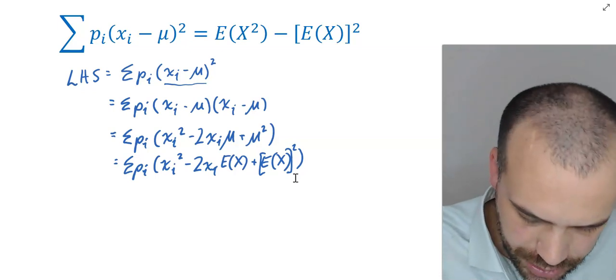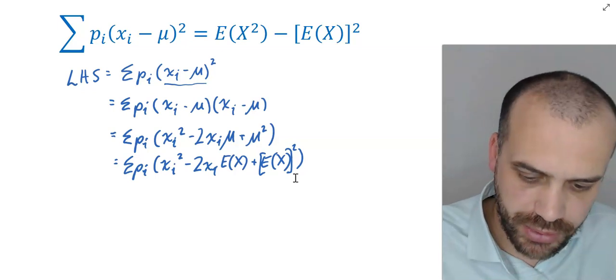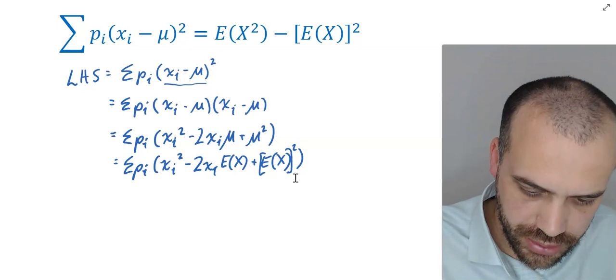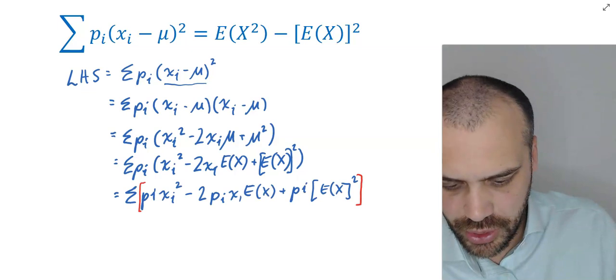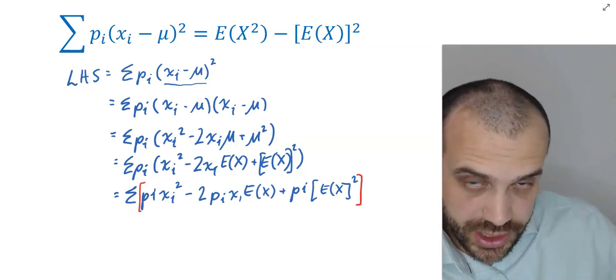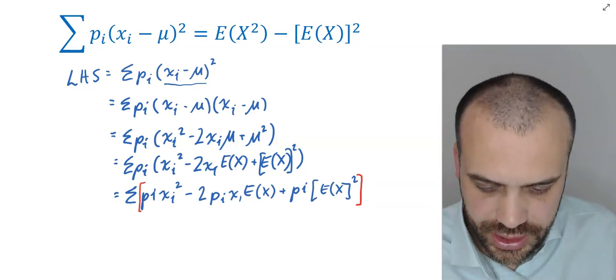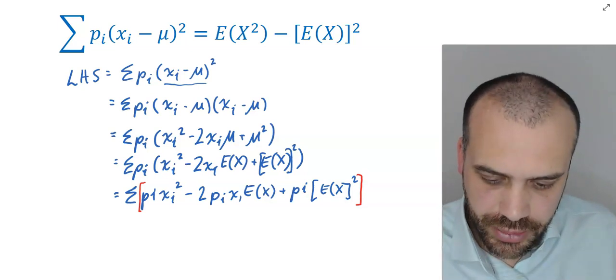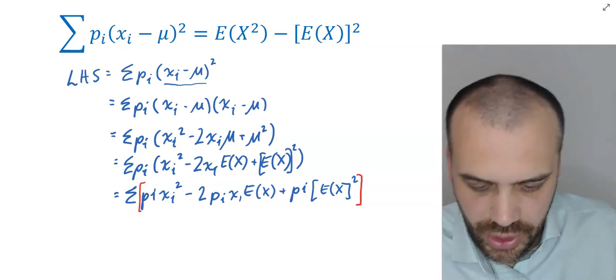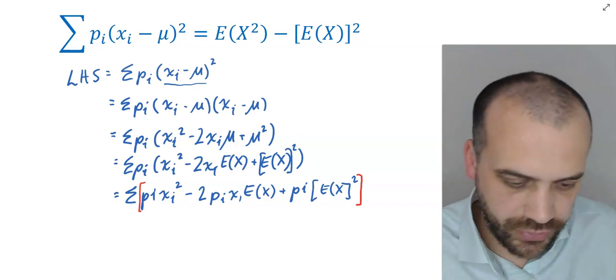Now what I can do is expand these brackets further by multiplying this term, this term, and this term by that probability there. All right, now what we have is a sum of, and then in a big set of red brackets there, this and this and this. We can expand that because it's going to be the sum of that, the sum of that, and the sum of that.